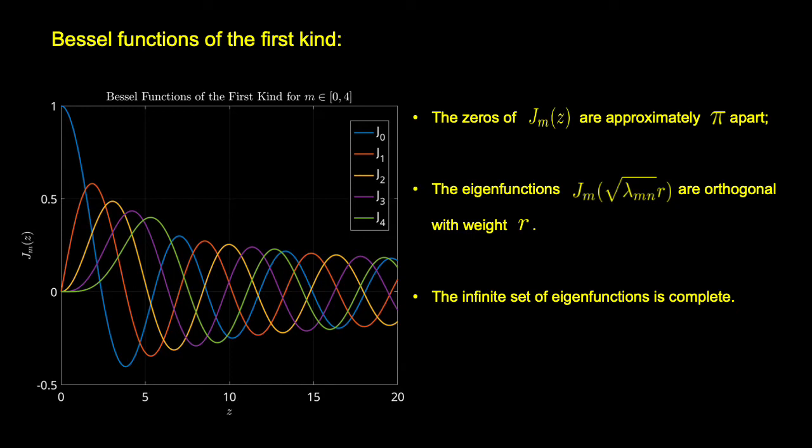The eigenfunctions J_m(sqrt(lambda_mn)r) are orthogonal and complete, which means any piecewise smooth function of r can be represented by a generalized Fourier series of the eigenfunctions.